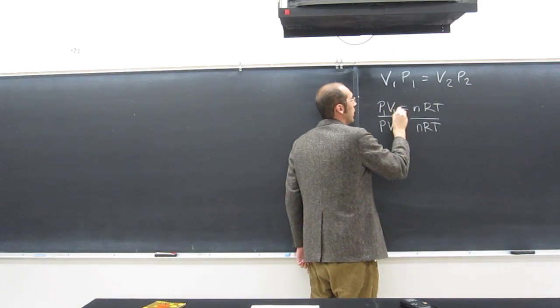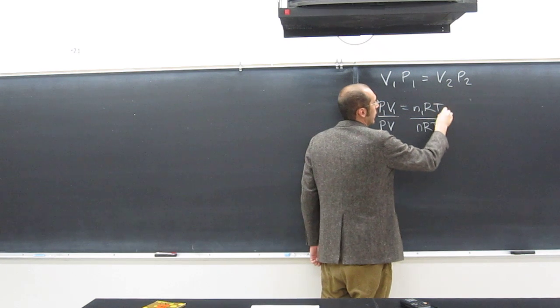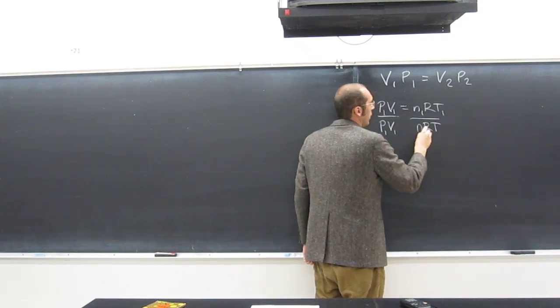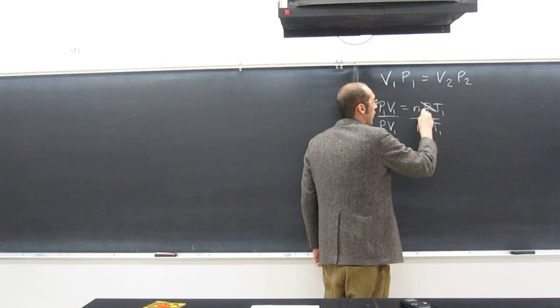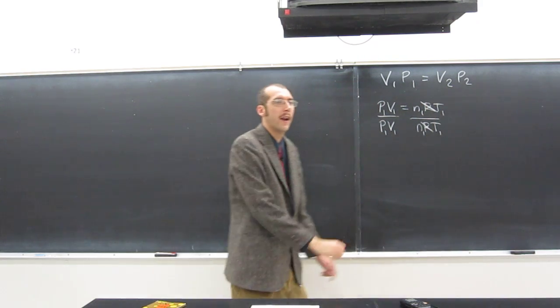And divide that by P-V equals N-R-T. But this top one's going to be 1-1-1, R is constant, T, 1-1-1-1, R is constant. So since R is constant, we can already cancel that out, right?